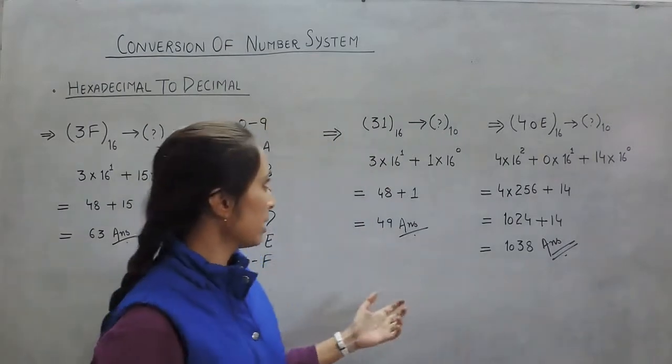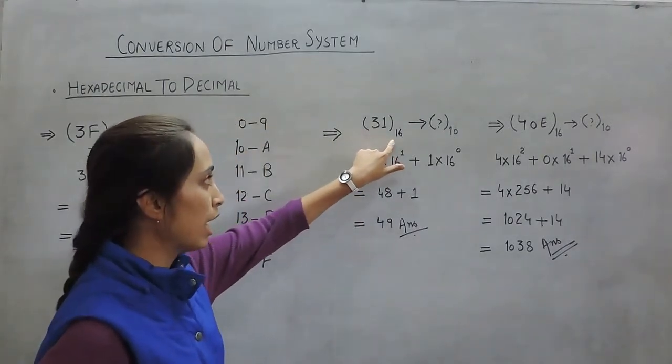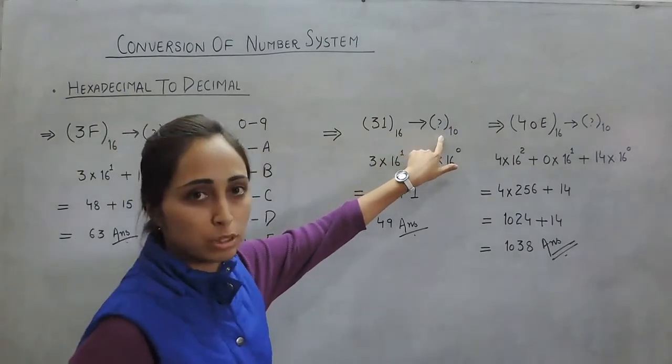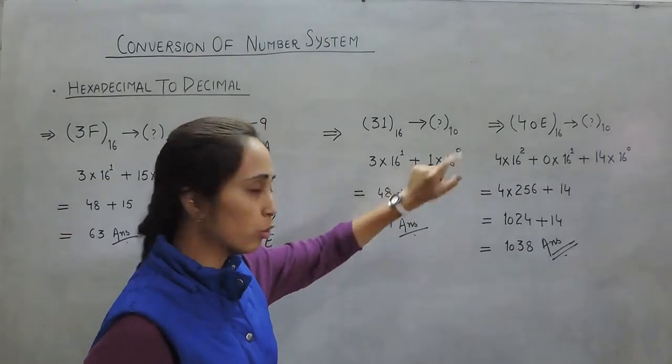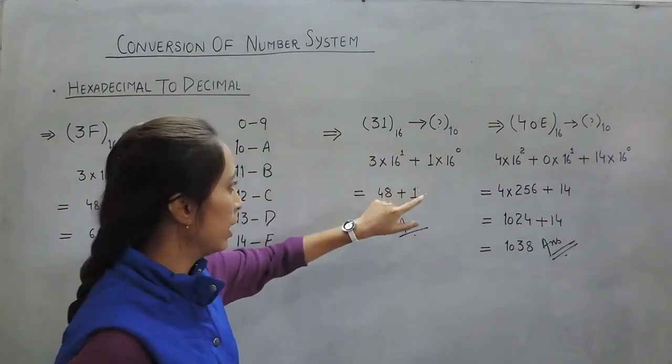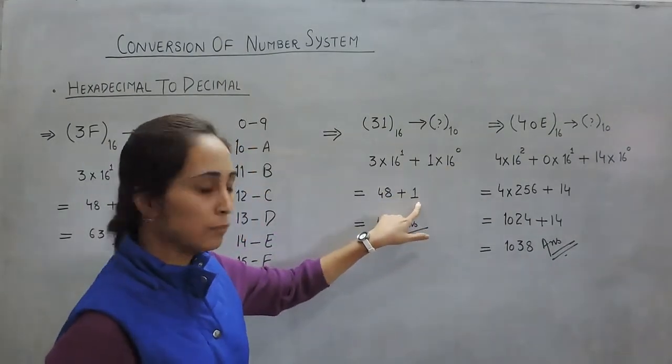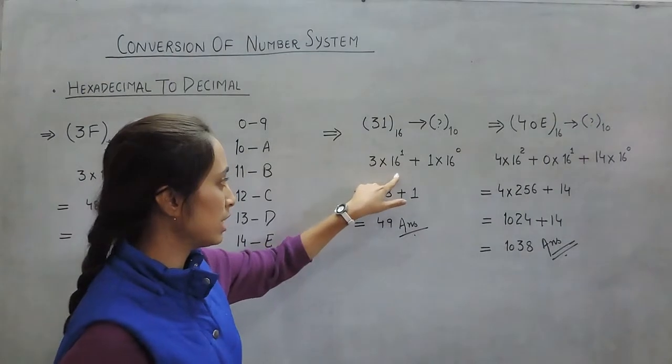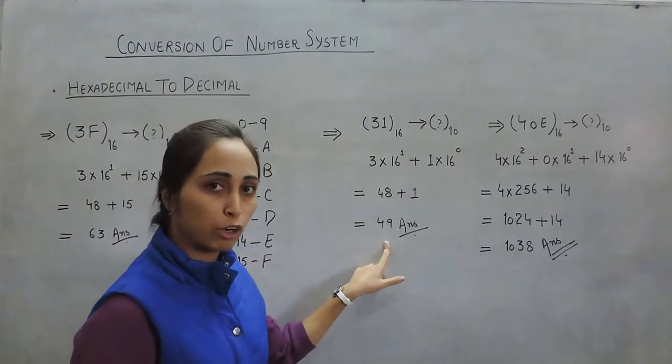Moving to another example, 31, which is a hexadecimal number. We multiply 1 with 16 to the power 0 and 3 with 16 to the power 1. Solving the expression: anything raised to the power 0 is 1, and 16 to the power 1 is 16. Multiplying by 3 gives 48, and the answer is 49.